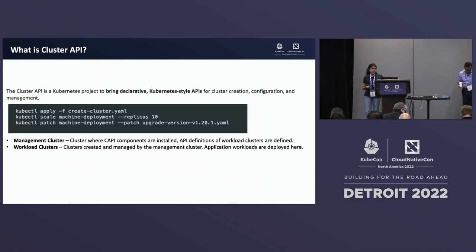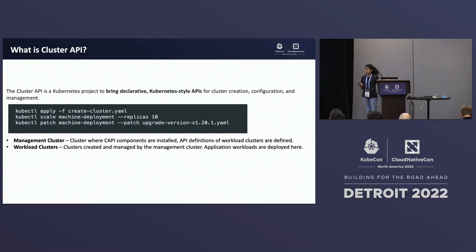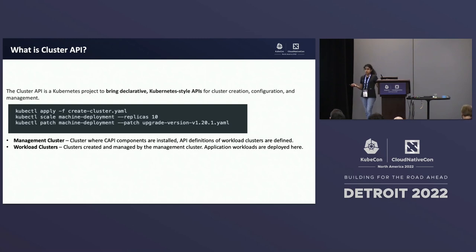What is Cluster API? The Cluster API is a Kubernetes project to bring declarative Kubernetes-style APIs for cluster creation, configuration, and management. The idea is that end users run familiar kubectl commands to create a cluster on an existing cluster. This existing cluster with Cluster API components installed is called the management cluster, and the child clusters created as a result are called workload clusters. The management cluster is where core CAPI components are installed and where API definitions of workload clusters are defined. Workload clusters are intended to host modern workloads.